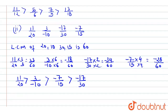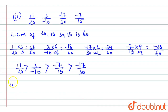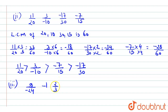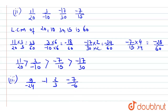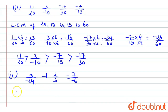Now we solve the third question. The values given are 9/(-24), -1, 2/(-3), and -7/(-6). Note that -7/(-6) simplifies to 7/6 since the negatives cancel. We take the LCM of 24, 1, 3, and 6, which is 24.